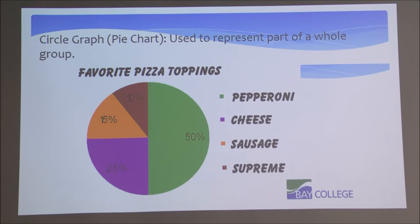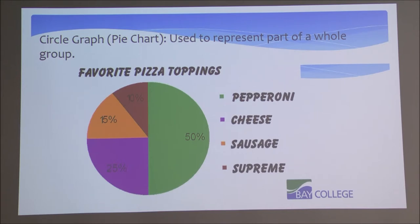The next thing we're going to look at is a circle graph, often called a pie chart, because it's round. It's a circular chart that describes the distribution of a whole. In this example, we have a circle illustrating favorite pizza toppings. A group of people were asked to choose their favorite toppings and split into four categories. All pie charts should have a key explaining what each part of the whole represents — here we have pepperoni, cheese, sausage, and supreme.